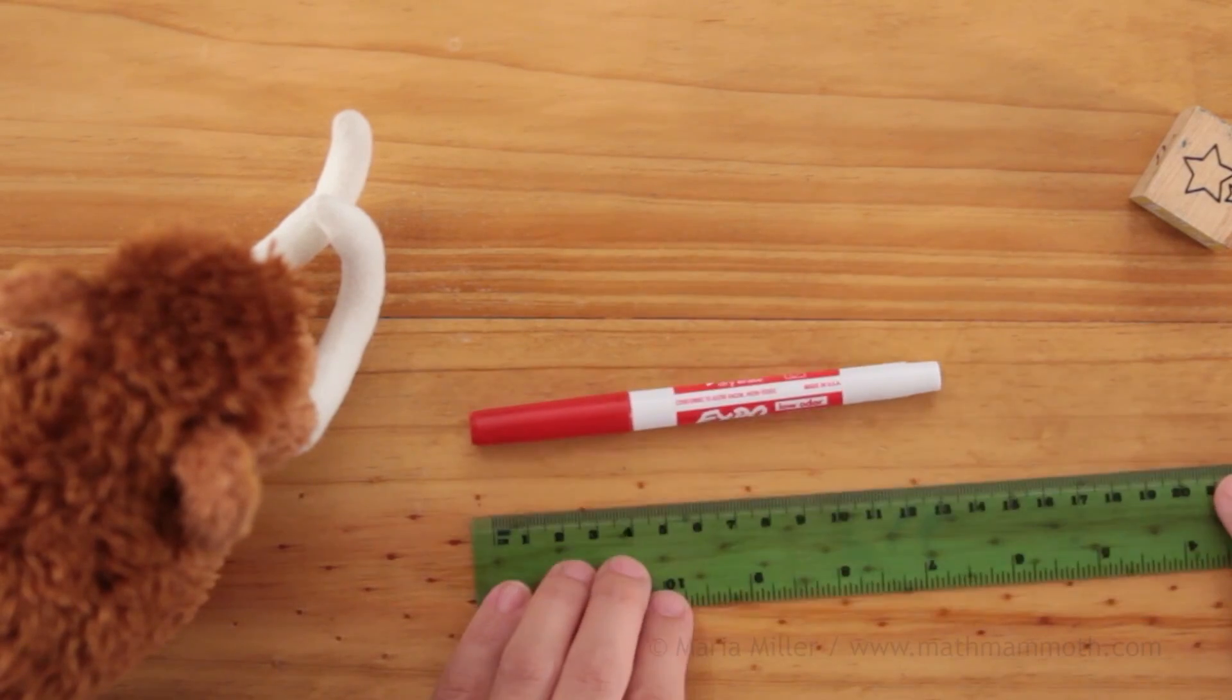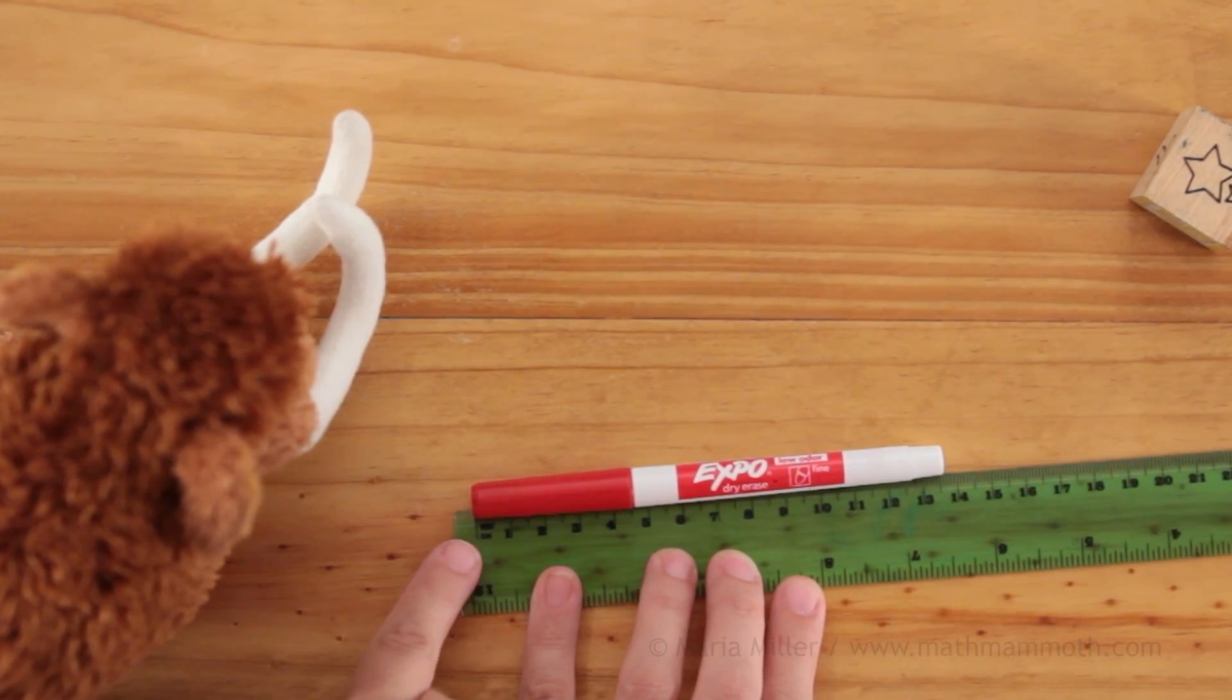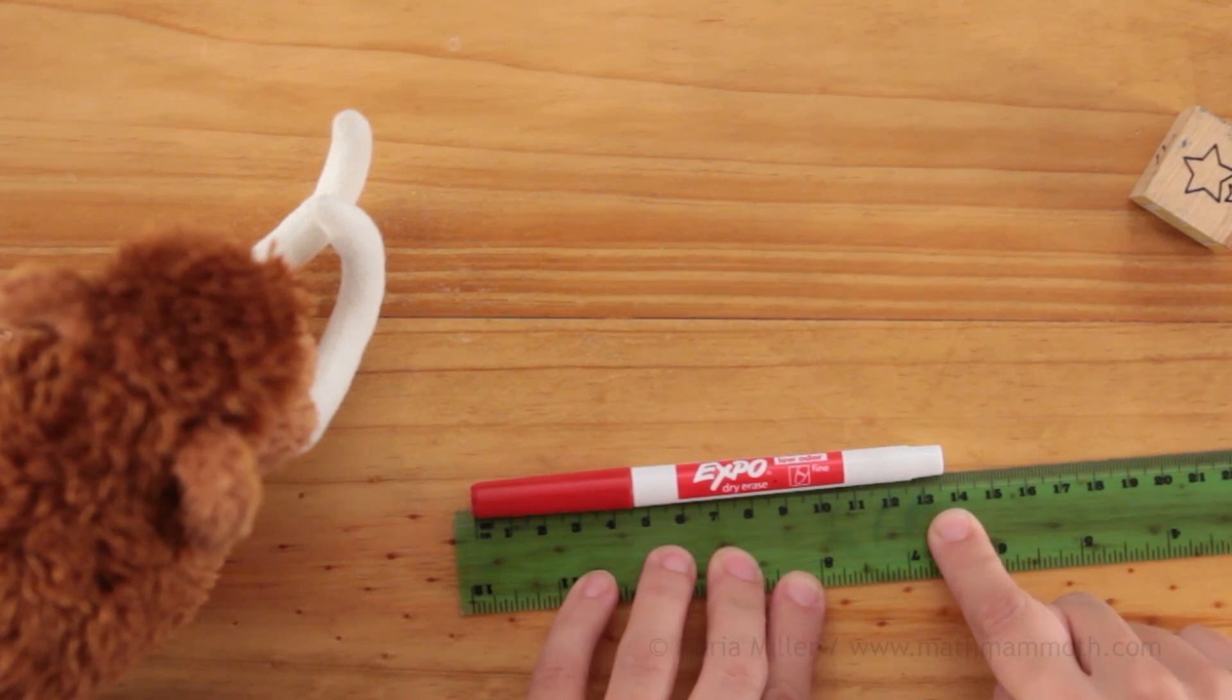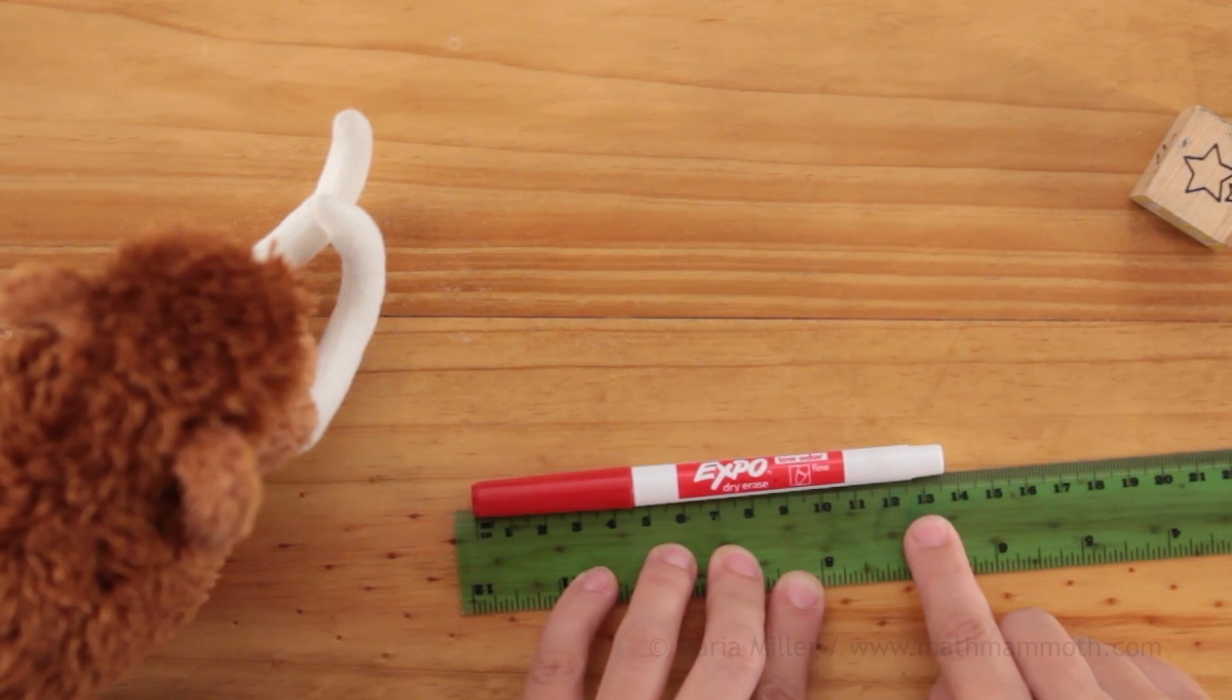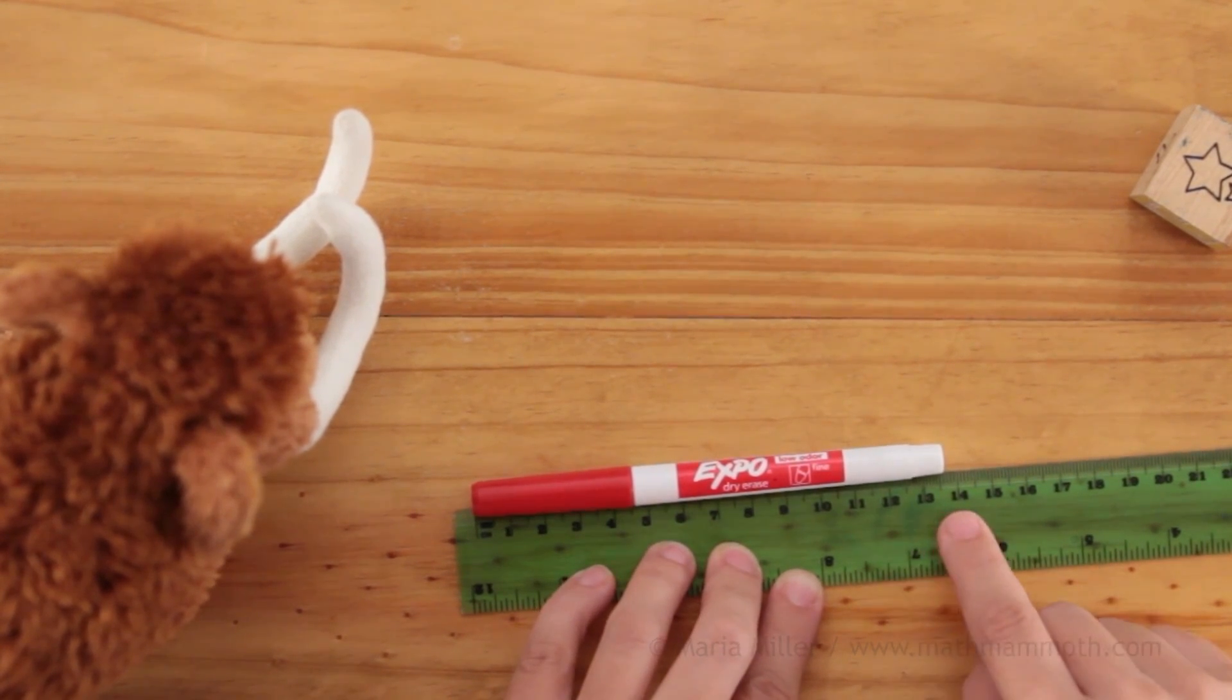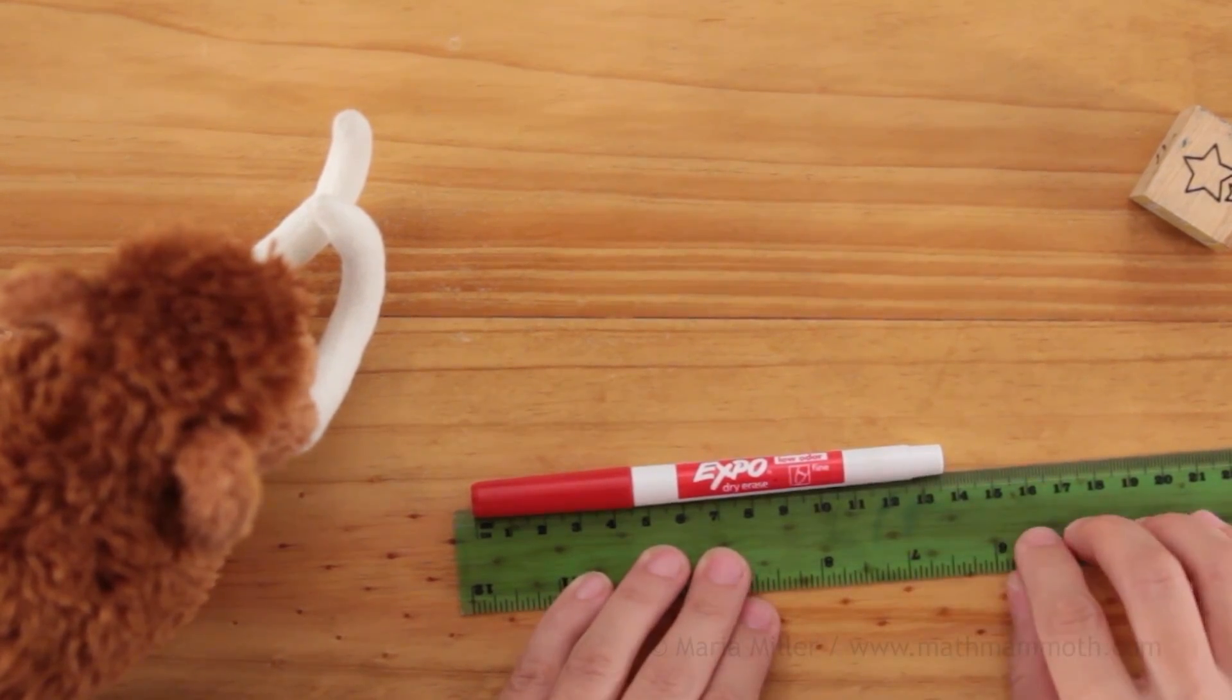Then the marker pen. Again, I need to line it up with the zero point here. Then we go over here. This is not exactly so many centimeters. See, it is past 13 centimeters. But it does not reach to 14 centimeters. It's about midway between 13 and 14. So we can say the marker pen is 13 and a half centimeters long.